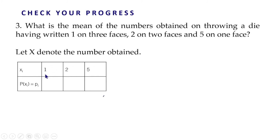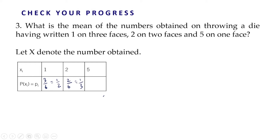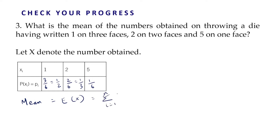Let the random variable X denote the number obtained. The various values which X can take are 1, 2, and 5. Since 1 is written on 3 faces, probability of getting 1 is 3 upon 6, which equals 1/2. Since 2 is written on 2 faces, probability of getting 2 is 2 upon 6, which is 1/3. Since 5 is written on 1 face, probability of getting 5 is 1/6. Now we have to find the mean, which is the expectation of this random variable. Expectation of X is given by summation of xi·pi.